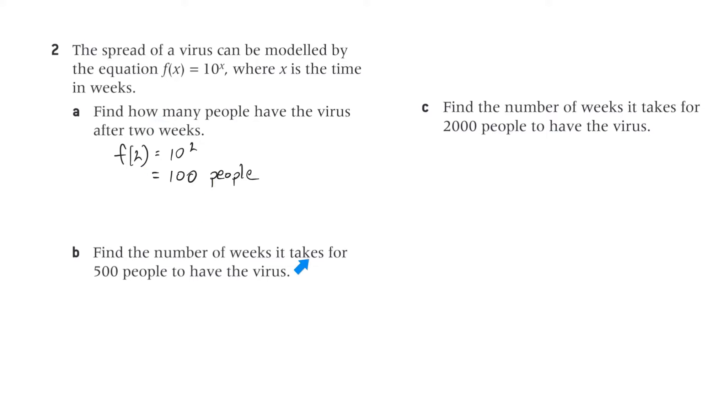Part b, find the number of weeks it takes for 500 people to have the virus. Well, 500 is now the function value, equals 10 to the x. Use the solve function, you get 2.7 weeks, or using logs, we get this here, which is also 2.7 weeks. I've chosen log base 10, because we bring x to the front, and log base 10 of 10 is 1. And log base 10 of 500 is 2.7.